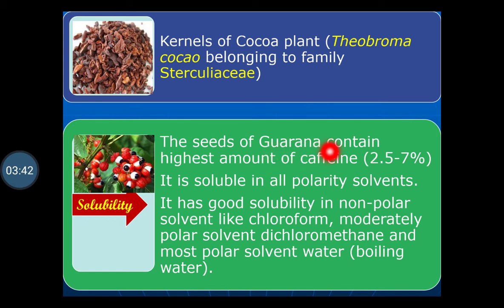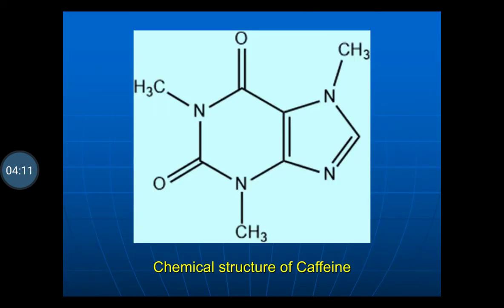The seeds of Guarana are therefore used for the extraction of caffeine. Caffeine is soluble in all polarity solvents — it has good solubility in non-polar solvents like chloroform, moderately polar solvents like dichloromethane, and in boiling water as a polar solvent. This solubility is important for the extraction of caffeine from its source. This is the chemical structure of caffeine.